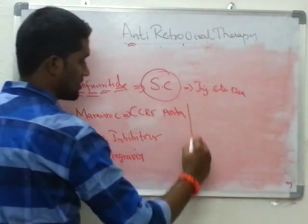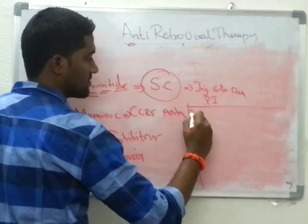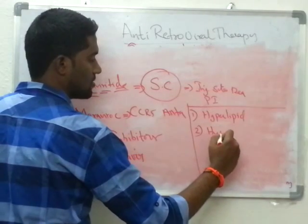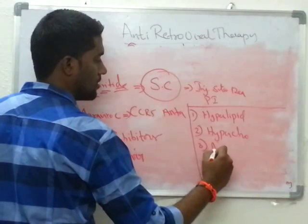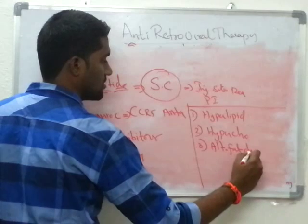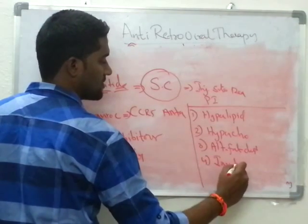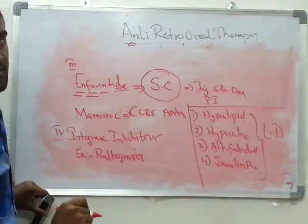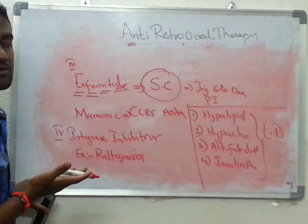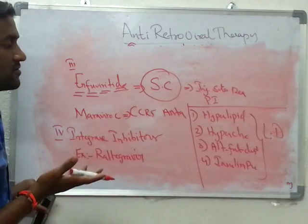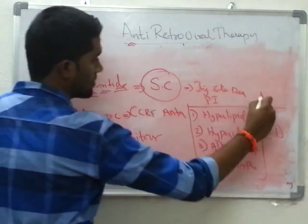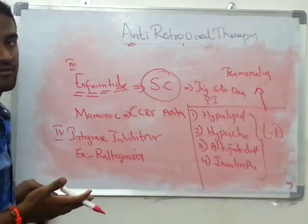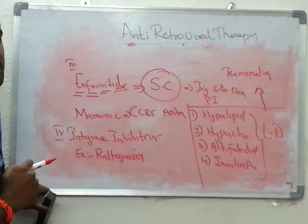One important thing to remember about protease inhibitors: they cause a spectrum of disease consisting of hyperlipidemia, hypercholesterolemia with altered fat distribution, and insulin resistance — this is lipodystrophy. The generalized side effect of all protease inhibitors is lipodystrophy, except Atazanavir. Also remember that Tesamorelin can be given to decrease the amount of abdominal fat in patients with lipodystrophy due to protease inhibitors.